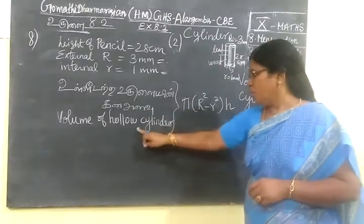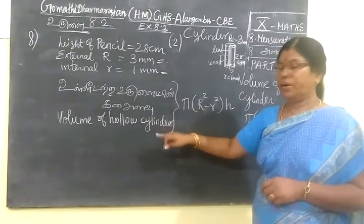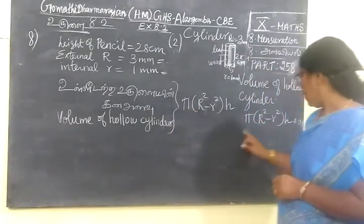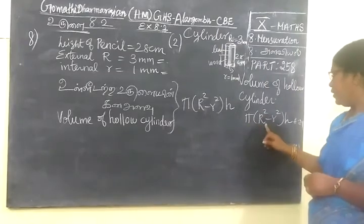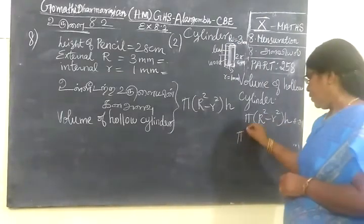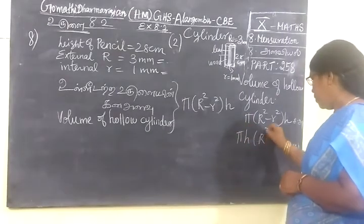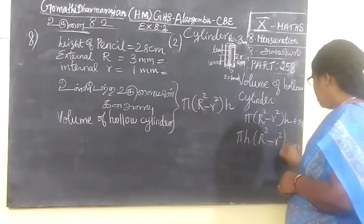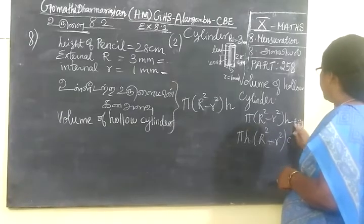Now we want to find volume of hollow cylinder. Volume of hollow cylinder. πh(R² - r²). That is π × h × (R² - r²) cubic unit.